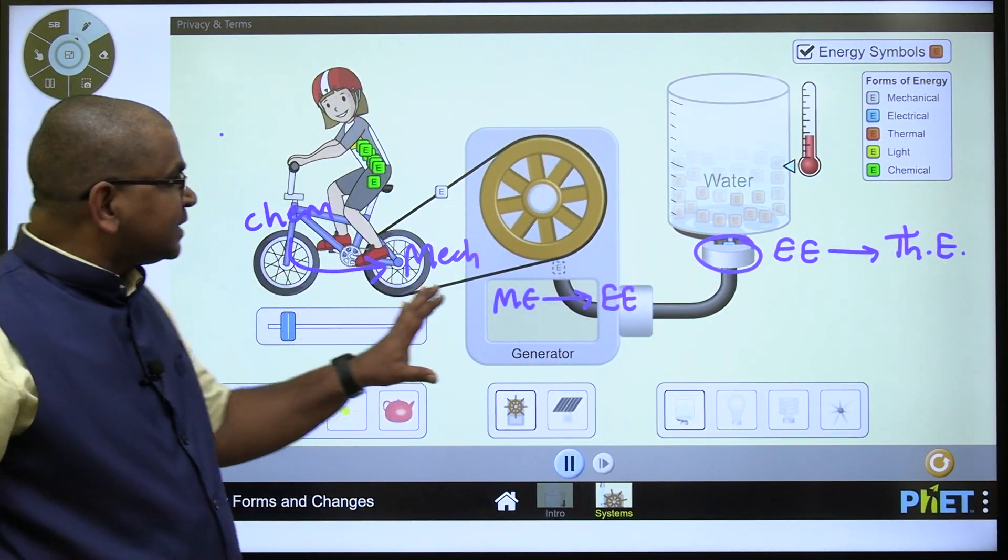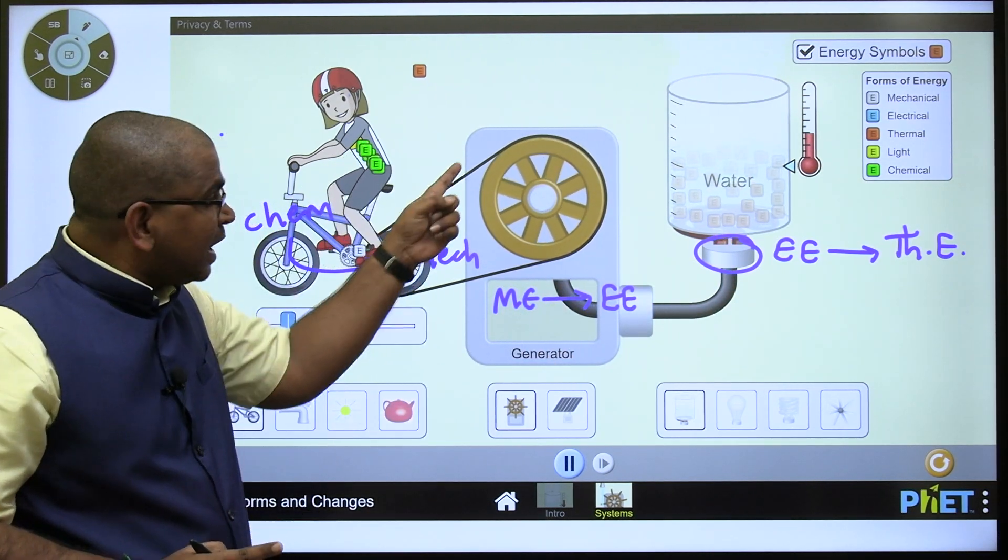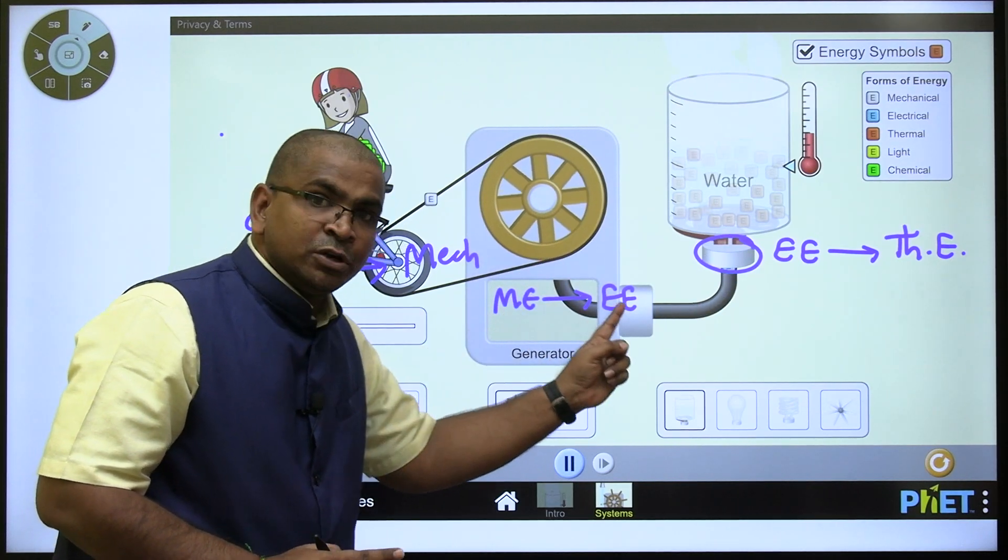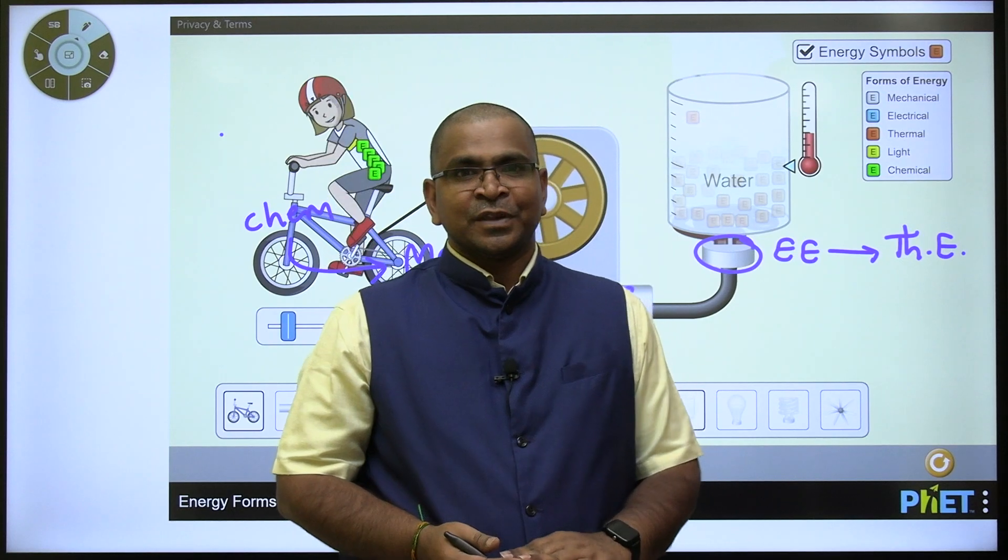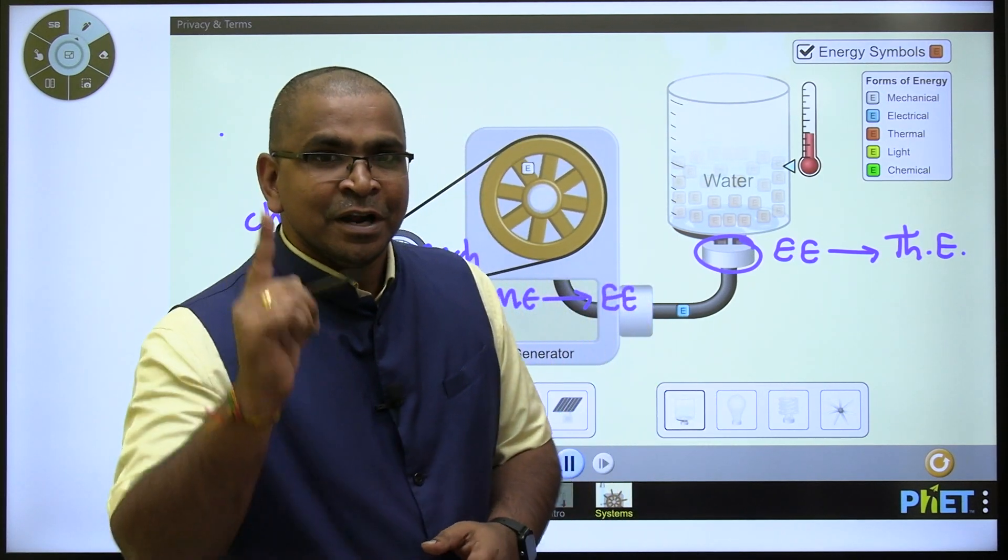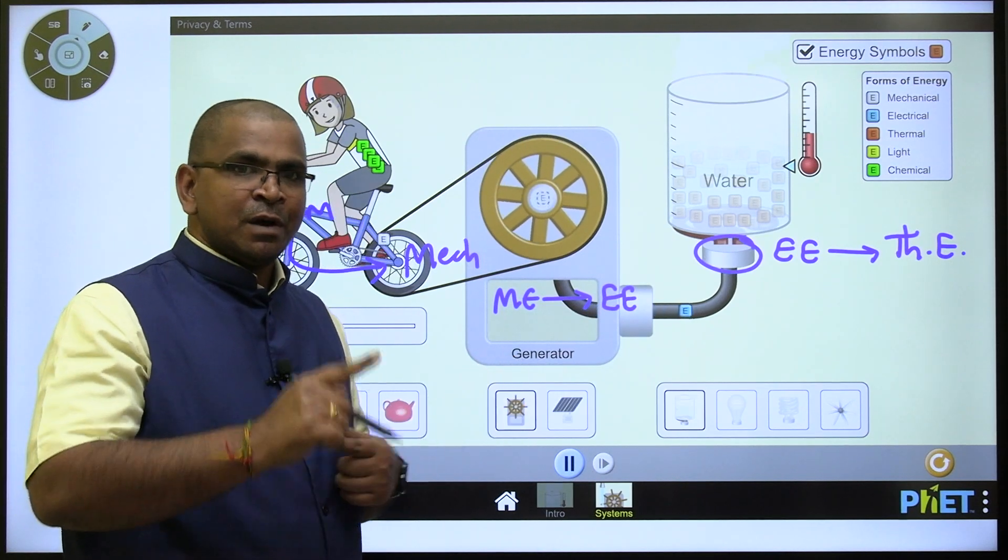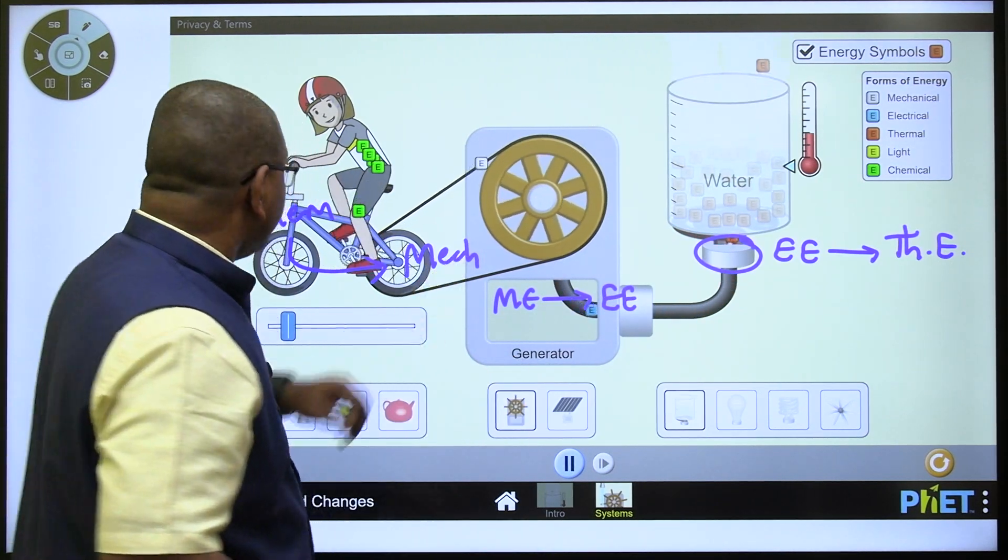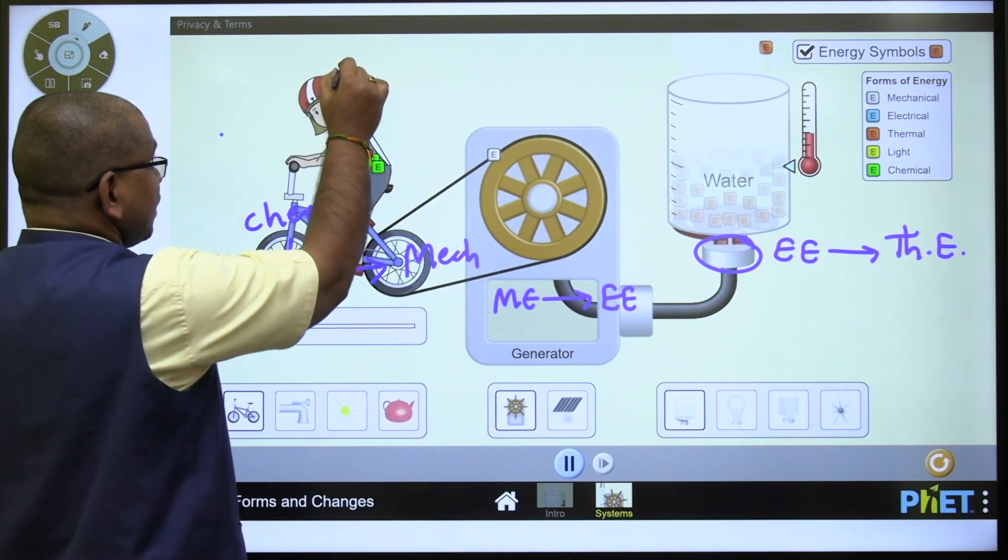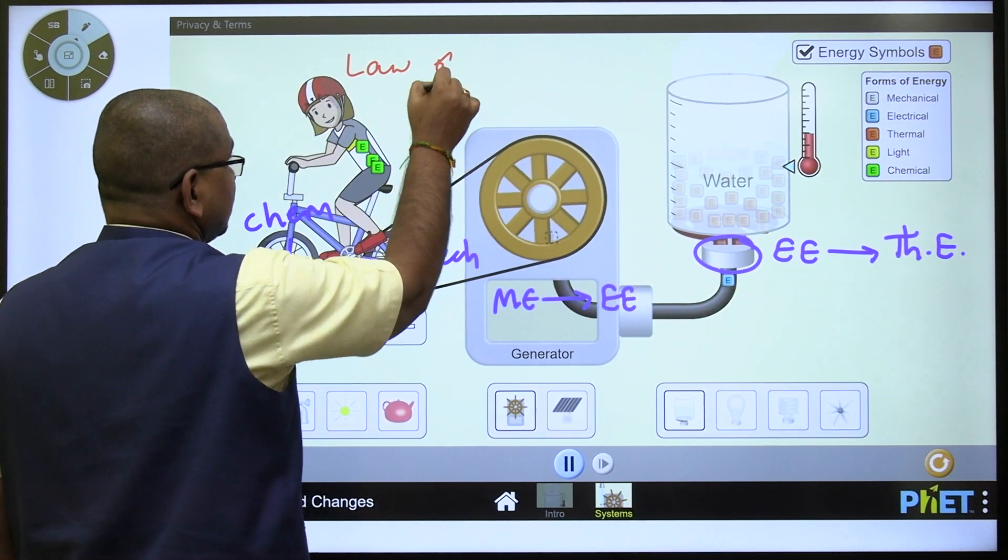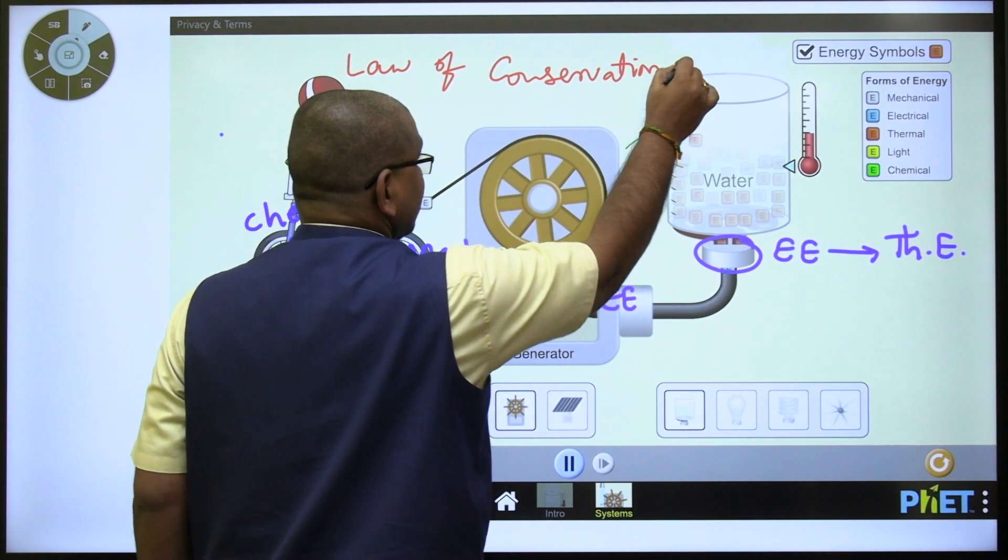So how many kinds of energy conversions are there? First conversion: chemical to mechanical. Second conversion: mechanical to electrical. Third conversion: electrical to thermal. So energy can neither be created nor destroyed, but it can be transformed or converted from one form to another form. This is called the law of conservation of energy.